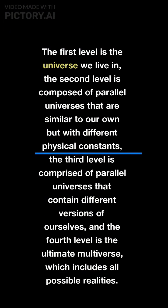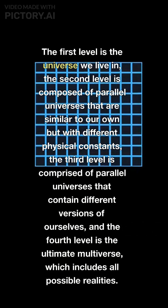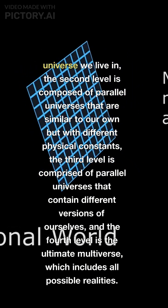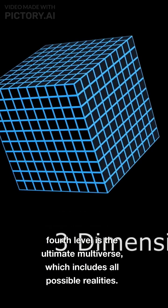The first level is the universe we live in, the second level is composed of parallel universes that are similar to our own but with different physical constants, the third level is comprised of parallel universes that contain different versions of ourselves, and the fourth level is the ultimate multiverse, which includes all possible realities.